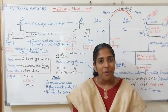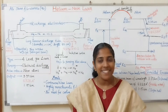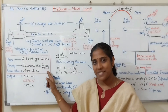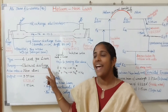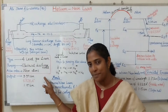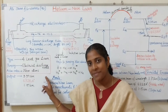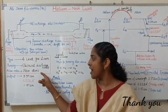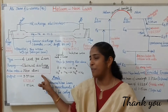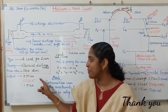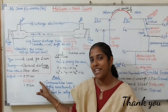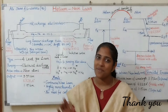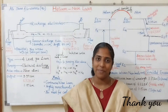That is all about the construction and working of helium-neon gas laser. It is a 4-level gas laser. Electrical discharge is used as the pumping method. The active medium is neon atom. It gives laser outputs of 3.39 micrometers, 6,328 Angstroms, and 1.15 micrometers.